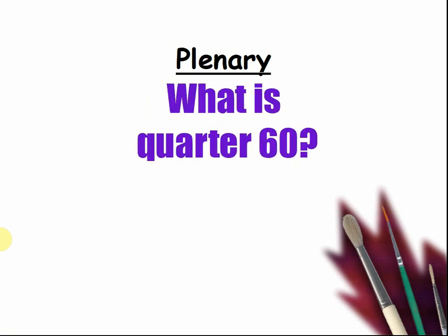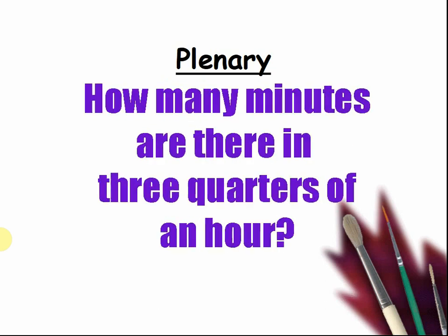What is a quarter of sixty? Three, two, one, tell me. That is correct again — the answer was fifteen. How many minutes are there in three quarters of an hour? Three, two, one, tell me. Wow, you are just amazing at maths. The answer of course is forty-five minutes.